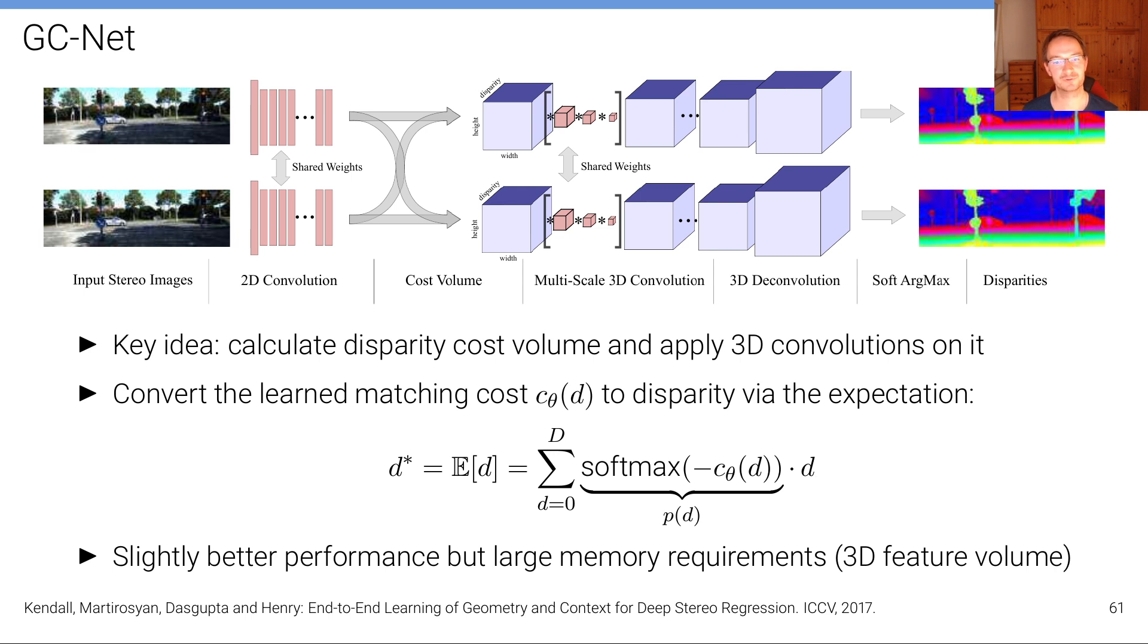and this is then multiplied with the disparity. So we are trying to minimize, we're computing the estimated disparity is the expected disparity and we're trying to minimize the discrepancy between the expected disparity from that cost volume and the ground truth disparity.